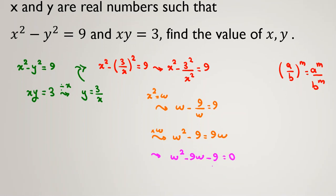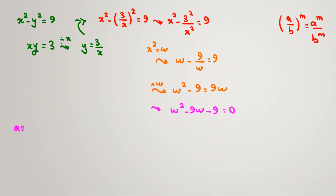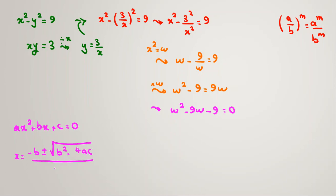Now we apply the quadratic formula. For ax squared plus bx plus c equals 0, x equals negative b plus or minus the square root of b squared minus 4ac, all over 2a. Applying this here, a equals 1, b equals negative 9, and c equals negative 9. Instead of x we have w.